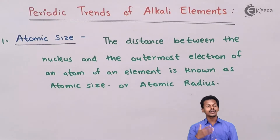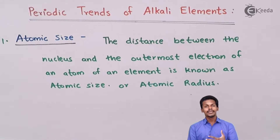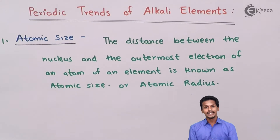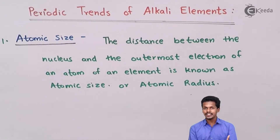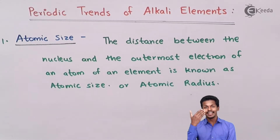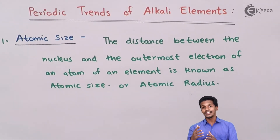Since we are talking about group 1 or alkali metals, the first element is lithium, then sodium, then potassium, then rubidium, then cesium, then francium, and so on. Lithium is the first element of group 1 because we are not considering hydrogen here — hydrogen is different from the group 1 elements lithium to francium. All of lithium to francium are metals, whereas hydrogen is present in a gaseous state. That is why hydrogen is not placed exactly above lithium but is positioned between group 1 and group 18 at the top of the periodic table.